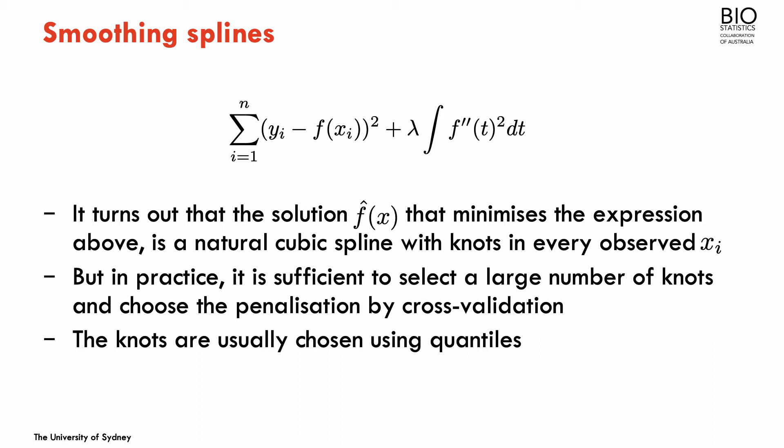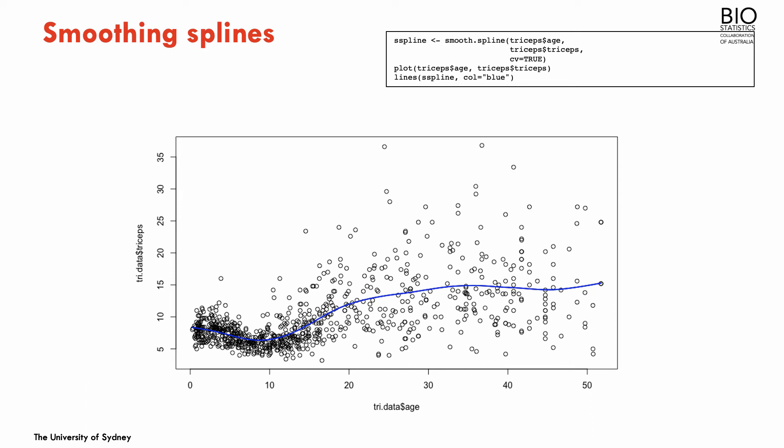You're going to have between the intervals defined by each knot the same number of observations. We can change that, and we can actually choose the places where the knots are going to occur. But the default of smoothing spline functions is usually to use the quantiles to select the position of the knots.